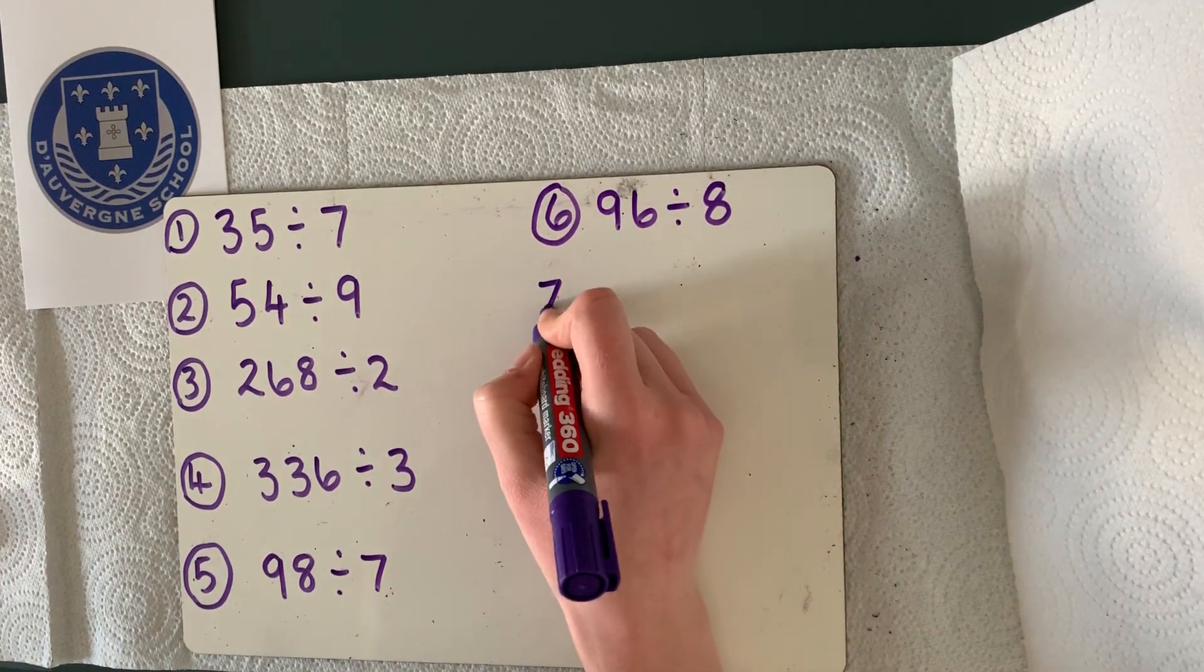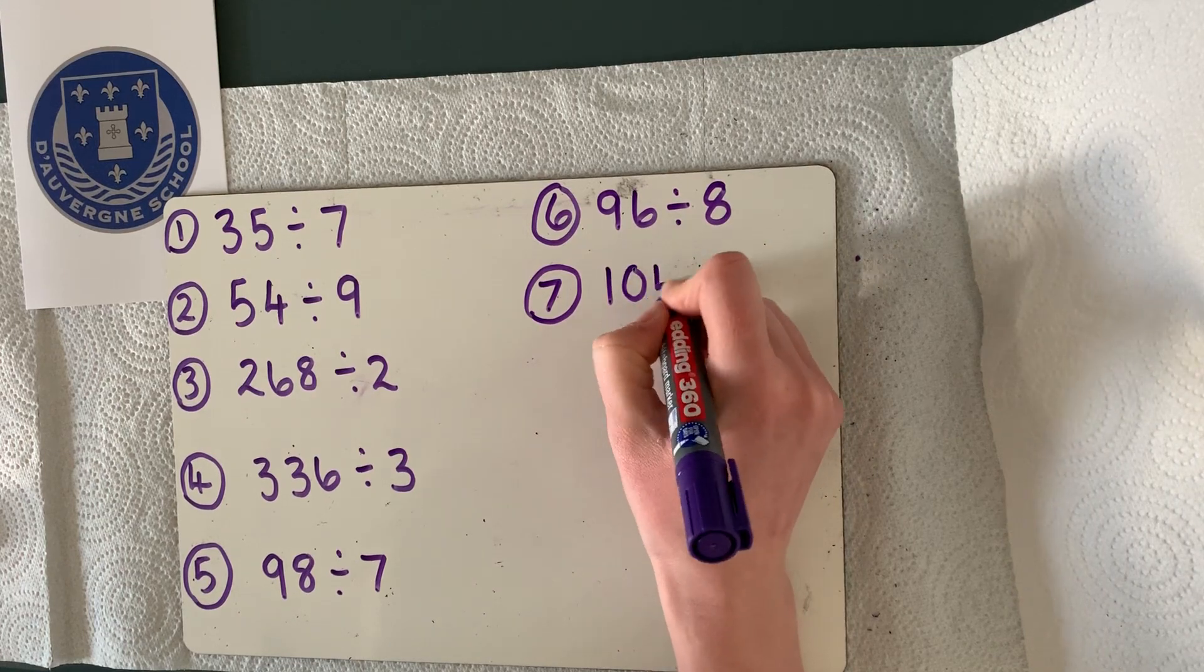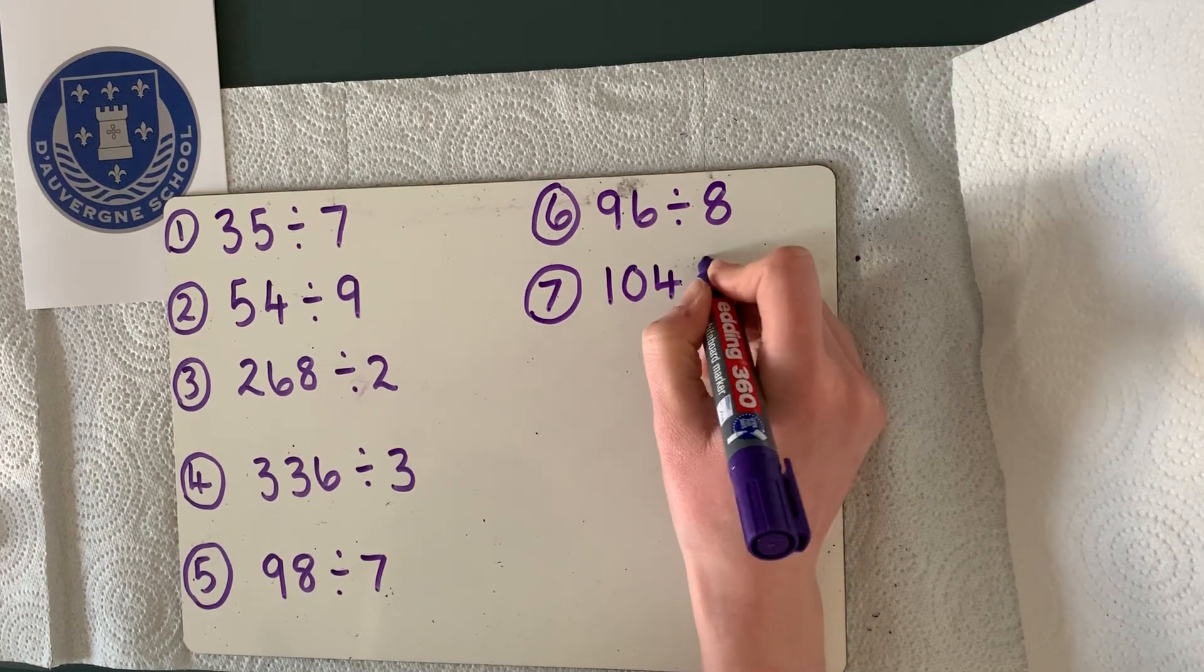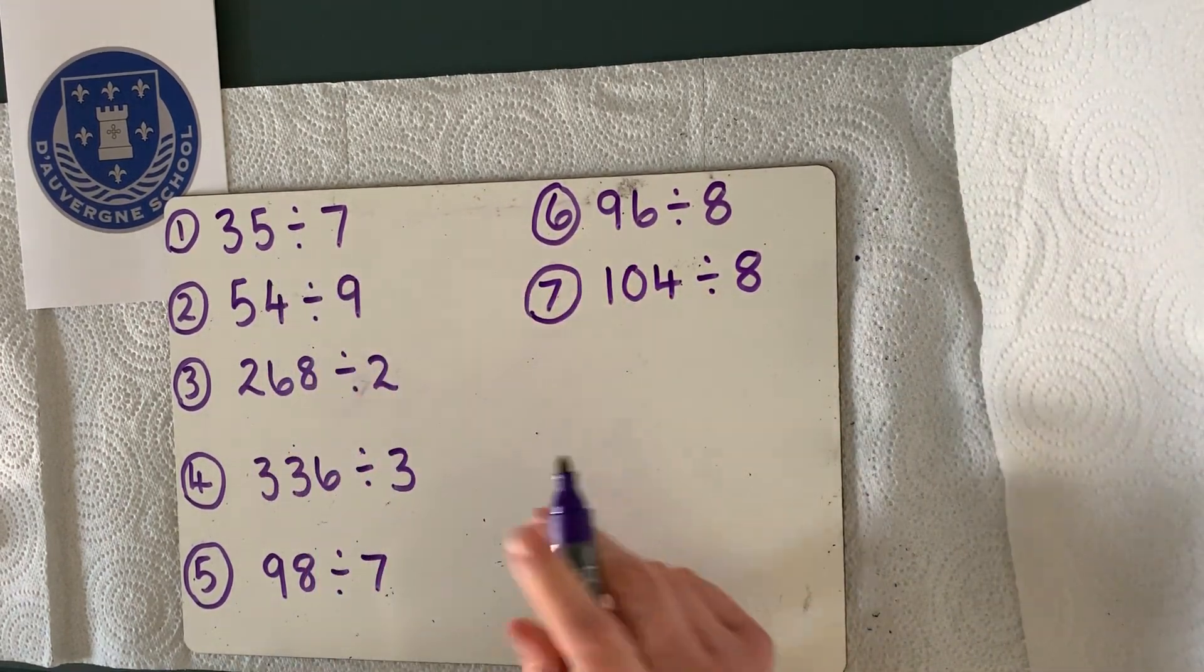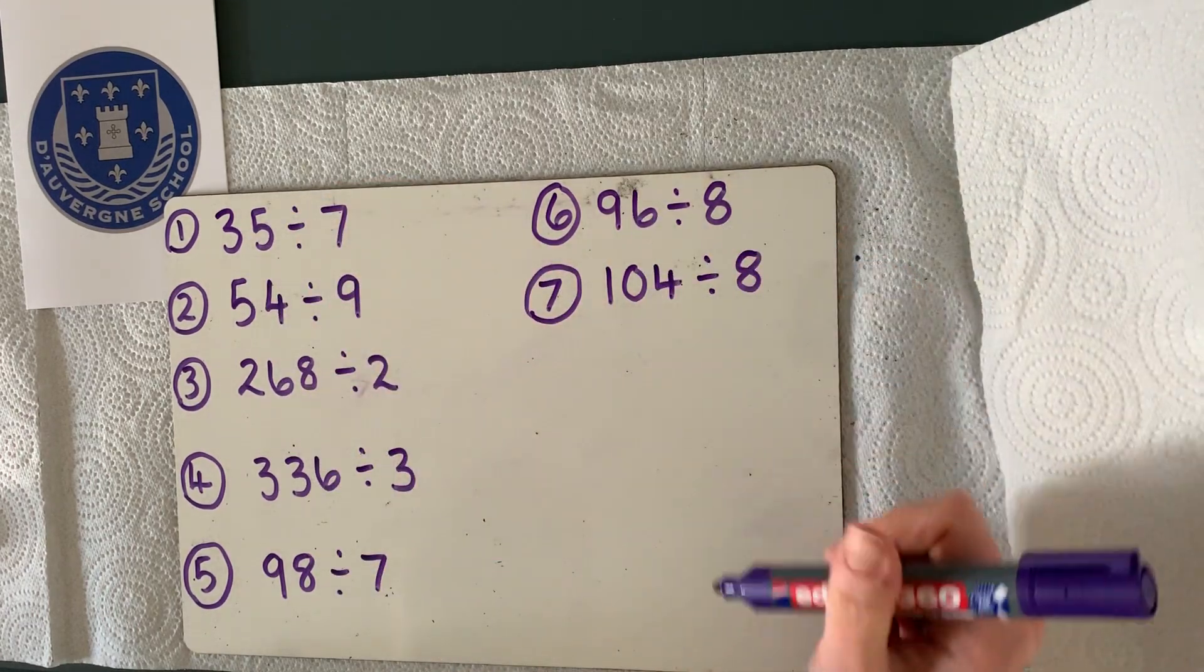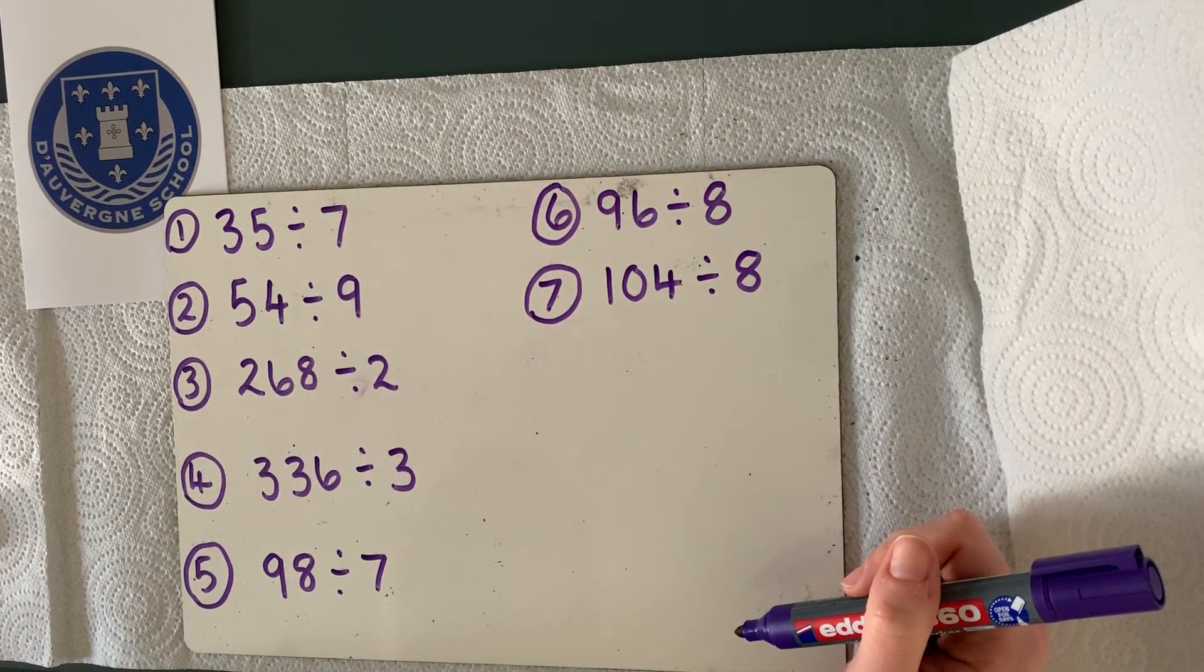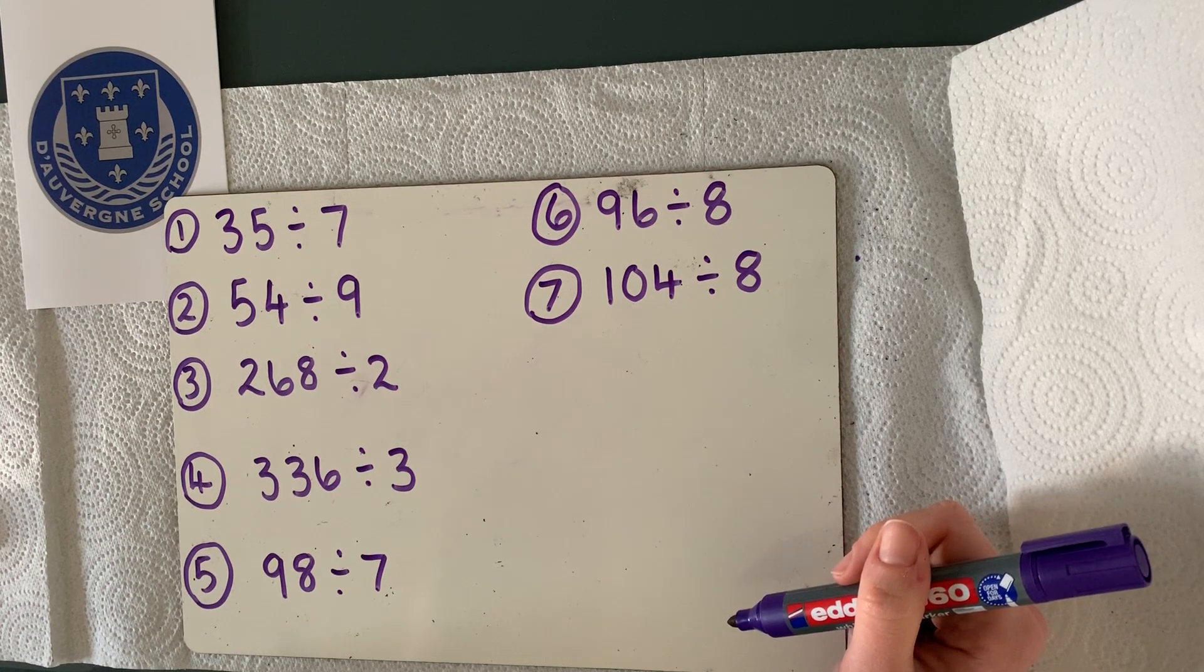And finally number 7: 104 divided by 8. Okay. Have a go at all of these. You might need to use a different method looking at the numbers, the dividends that we are looking at here. So it's up to you what method you choose to use. Good luck!